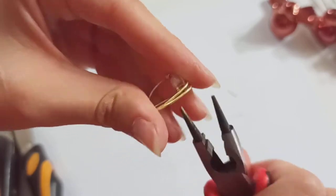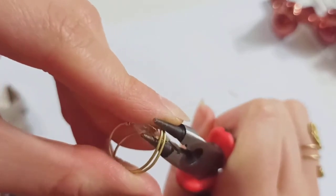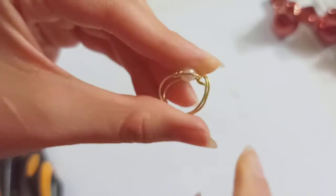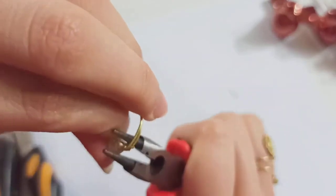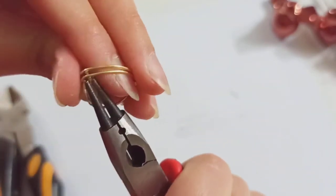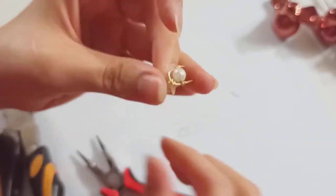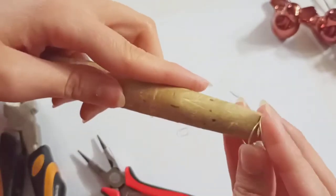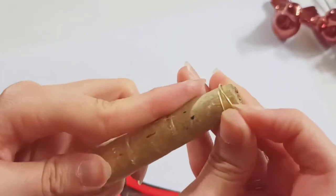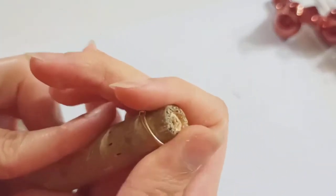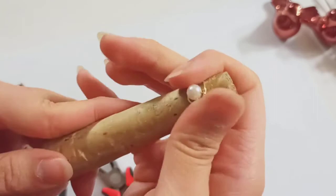And also to close this part so that it would be like little loops here. And if needed again put it on your mandrel to correct the shape.